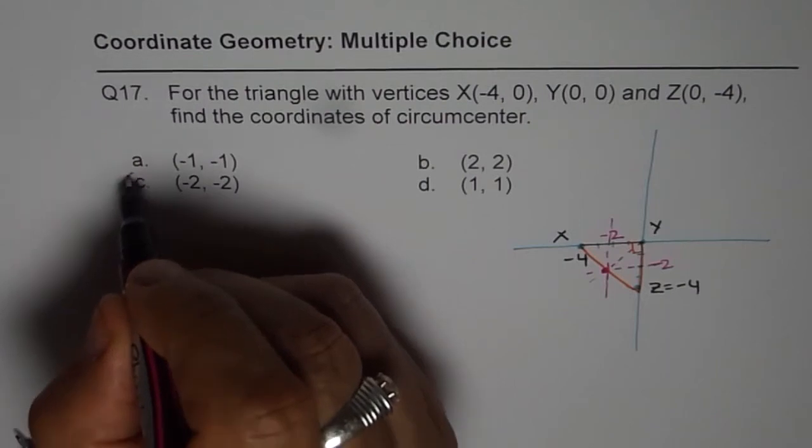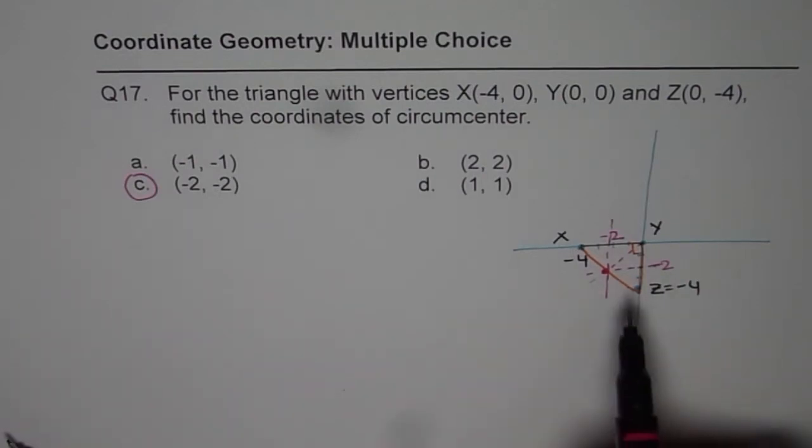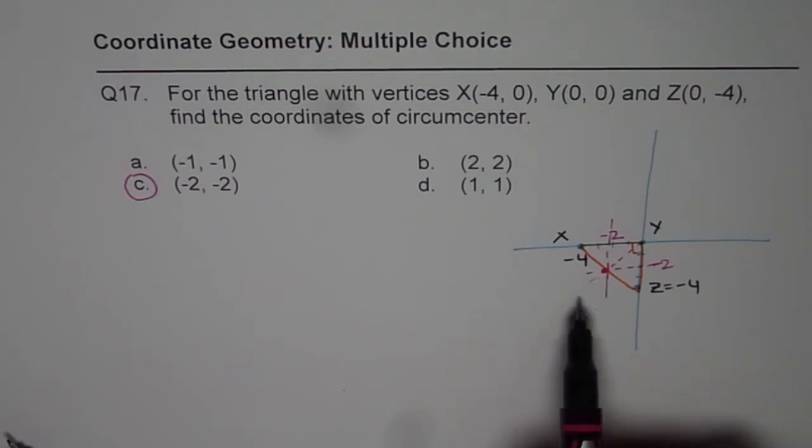So the choice is C. So that is how we can easily find the circumcenter, which is intersection of right bisectors of the triangle, when we have a right triangle. So you don't really have to find the equations and the point of intersection. It saves a lot of time by knowing this property. I hope that helps. Thank you.